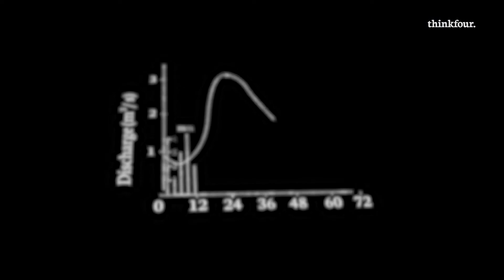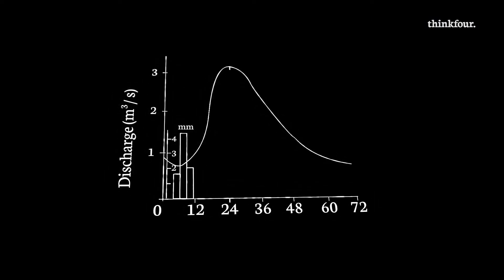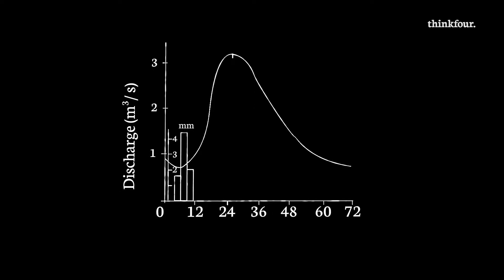Now that we have our definition, let's simplify things further. When you think about a hydrograph, consider it as two basic graphs: a bar graph that shows rainfall, and a line graph that shows river discharge — that's just another way of saying volume of water. In the exam, you'll be expected to use a hydrograph to describe changes in discharge and suggest reasons why these changes may have occurred.